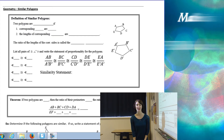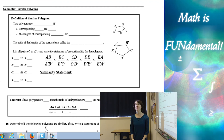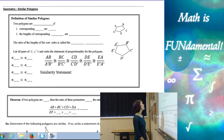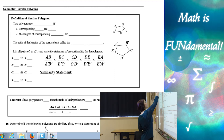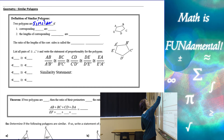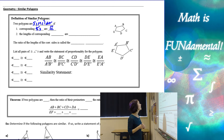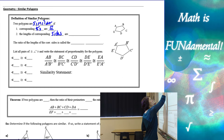Hi class, welcome to Math is Fundamental. Today we're going to be talking about similar polygons. To start off, let's define what a similar polygon is. Two polygons are similar if corresponding angles are congruent, and the lengths of corresponding sides are proportional.